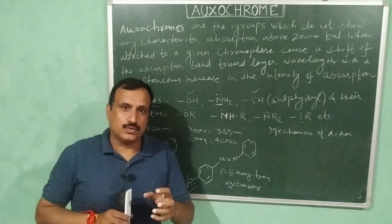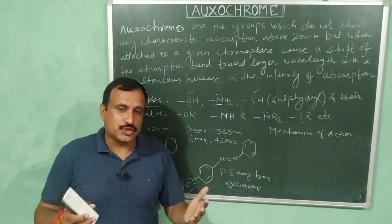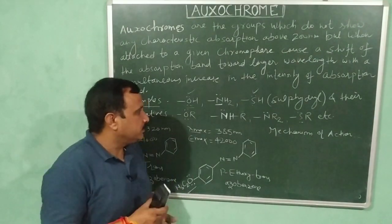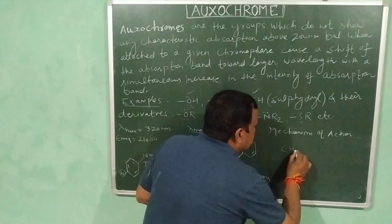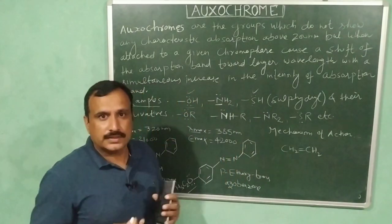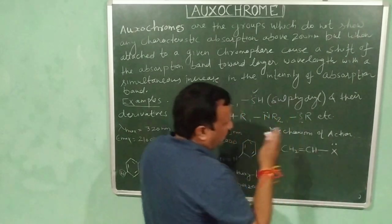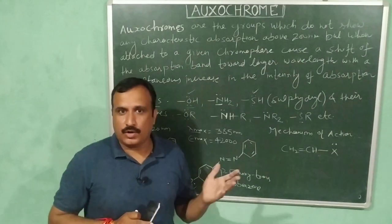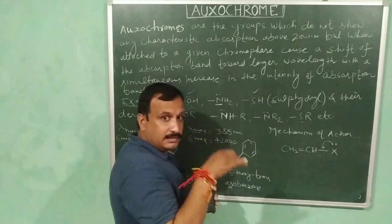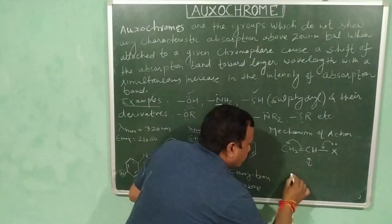These non-bonding electrons present on the oxochromes enter into conjugation with the chromophore and extend the conjugation of the chromophore. For example, consider a basic chromophore — ethylene. When one of its hydrogens is replaced with an oxochrome, the non-bonding electrons of the oxochrome will extend the conjugation by entering into conjugation with the chromophore. After this conjugation, the carbon atom acquires a negative charge.